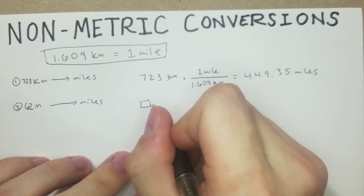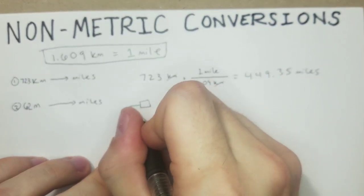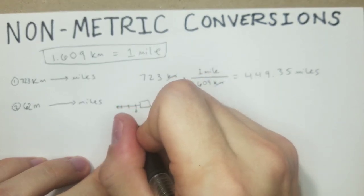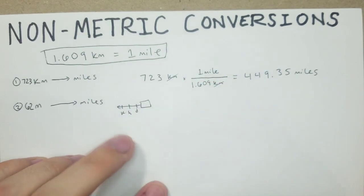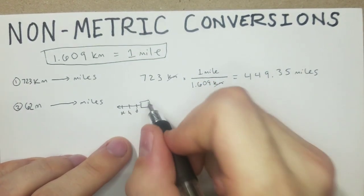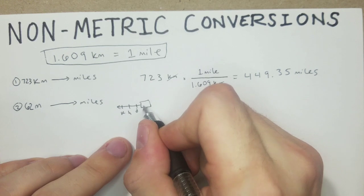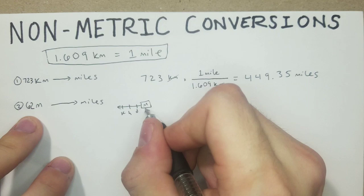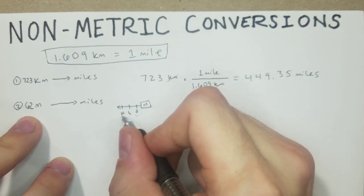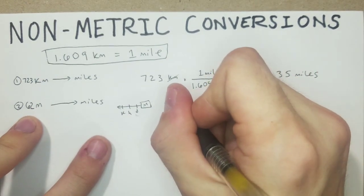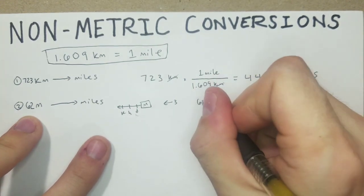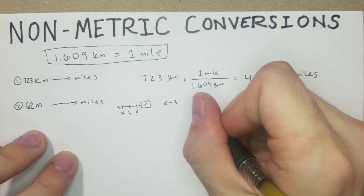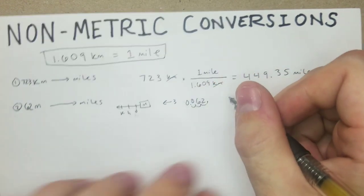Base unit, and then we only need this side. So KHD, we're trying to get to kilometers from meters. We're going to go 1, 2, 3 to the left. So it takes 62 right there, 1, 2, 3, gives us 0.062 kilometers.